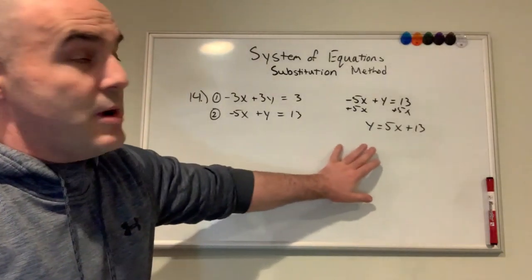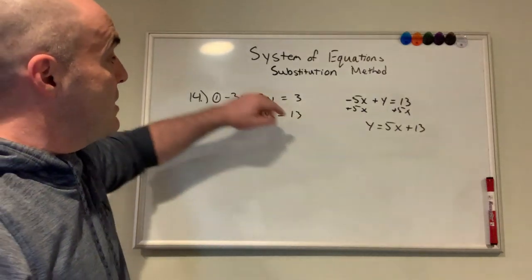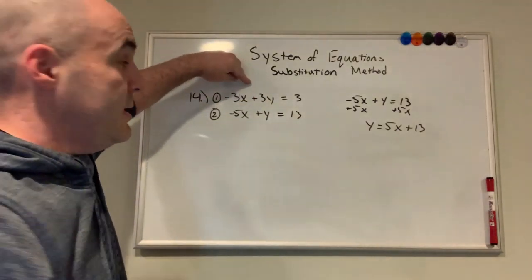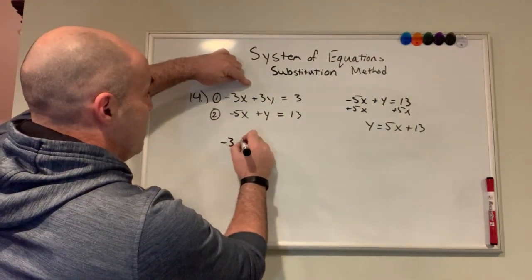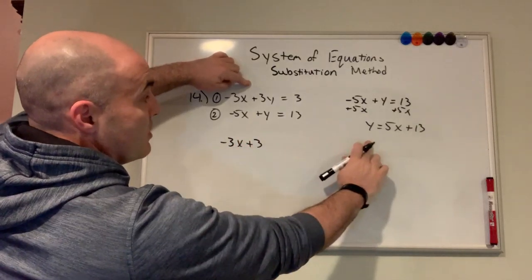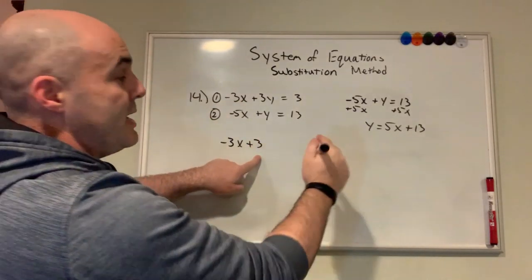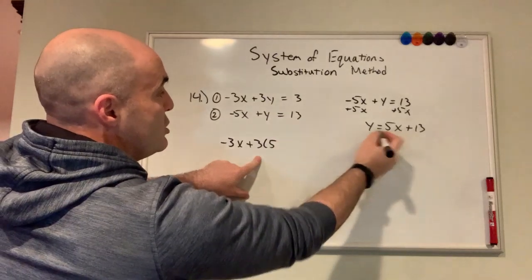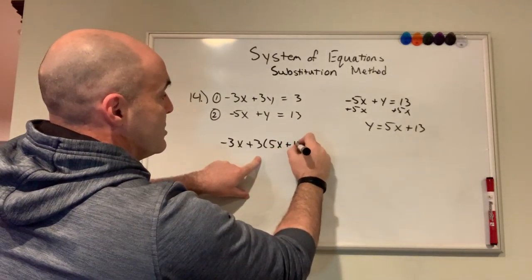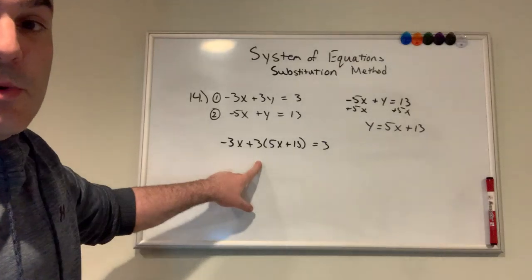Okay, so since I rearranged number two, I'm going to substitute that into equation one. So now I have negative 3x plus 3y. But now we know what y equals, and we'll substitute in 5x plus 13. And it equals 3.